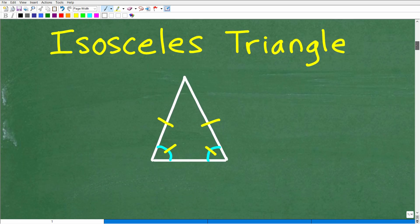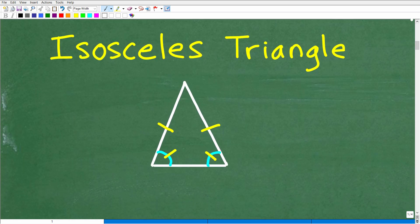And first, let's just define what it is. Super, super easy. So an isosceles triangle is a triangle where two sides are the same length.